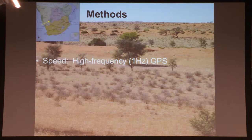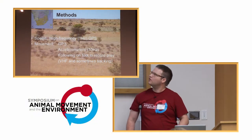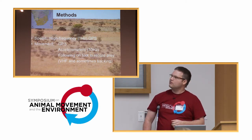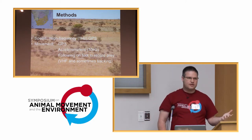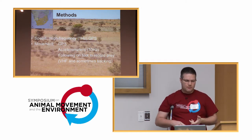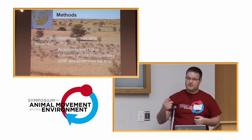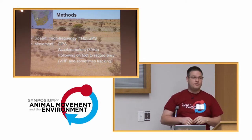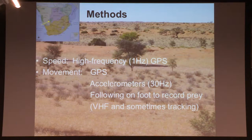We caught a few cheetahs and put high-resolution accelerometers and GPS units onto them. While we had the cheetahs, we used the opportunity to do a movement study as well. We put three accelerometers on each cheetah — battery power and memory space are always an issue. The accelerometers ran at 30 hertz, each lasting about five days, while the GPS units lasted about ten hours. We also followed these cheetahs on foot to record prey species and figure out the exact track of the hunting dynamics.